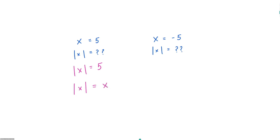On the right side, similar question. Say I were to tell you that x is equal to negative five, and then ask what is the absolute value of x? The absolute value of x is equal to the absolute value of negative five, which means absolute value of x is equal to five. However, in this case, that means absolute value of x is equal to negative x — because x was negative five, and therefore negative x is positive five.